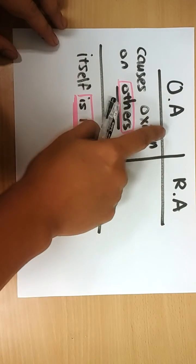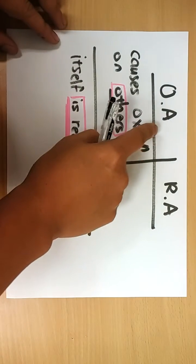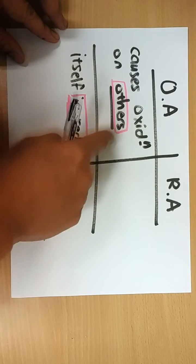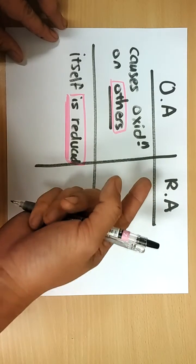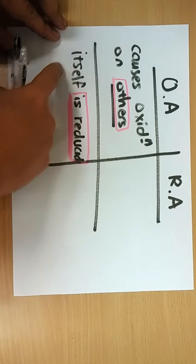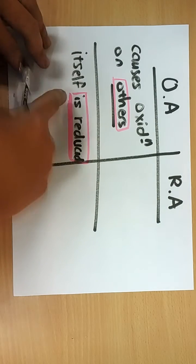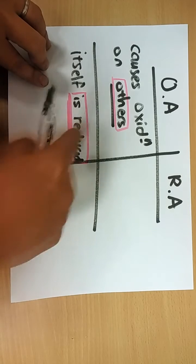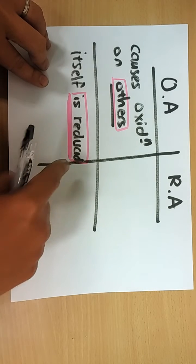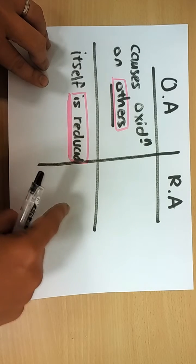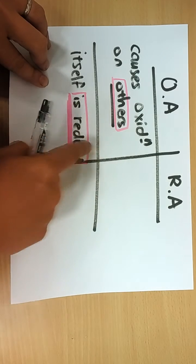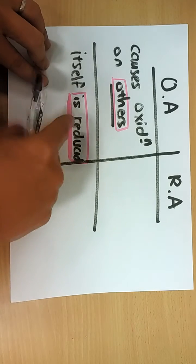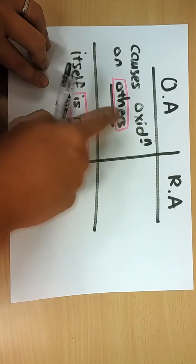An oxidizing agent is something that causes oxidation on others — it causes other things to be oxidized, but itself is reduced. So its oxidation state decreases after the reaction. Look out for the one that is reduced; that is the oxidizing agent. So it's a reverse.